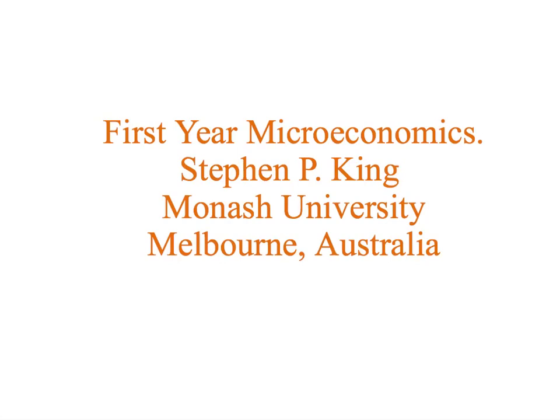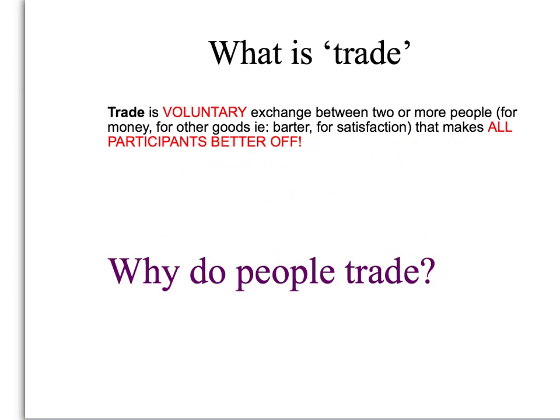Hi, and welcome to First Year Microeconomics. In this presentation, we're going to discuss the third reason why people trade: comparative advantage. First, a reminder — what is trade? Our definition is that trade is voluntary exchange between two or more people that makes all participants better off.